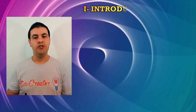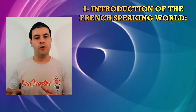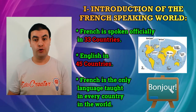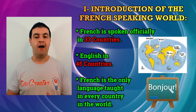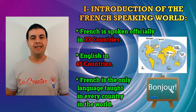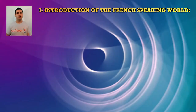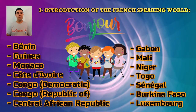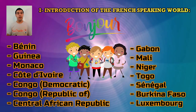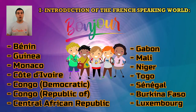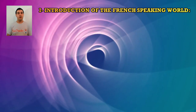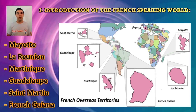Let's start with part one: introduction to the French-speaking world. French is an official language or one of the official languages of 33 countries in the world, making it second after English with 45 countries. French is also the only language taught in every country in the world. An official language means it is the language of education, administration, and government, and it is spoken by most of the population in that country.